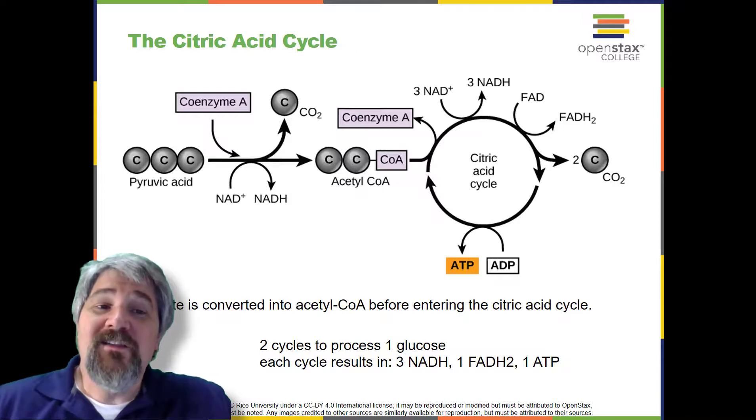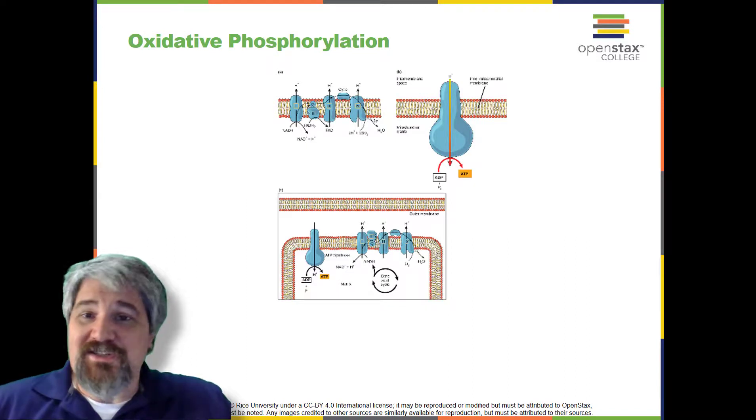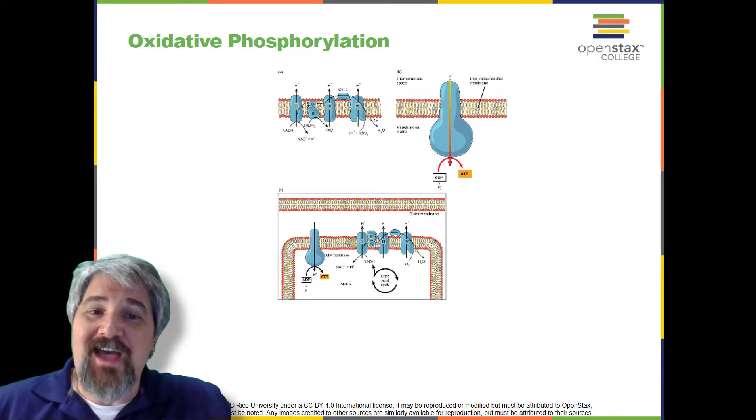Several of the intermediate compounds in the citric acid cycle can be used in synthesizing non-essential amino acids. Therefore, the cycle is both anabolic and catabolic. Oxidative phosphorylation. You have just read about two pathways in glucose catabolism, glycolysis and the citric acid cycle, that generate ATP.